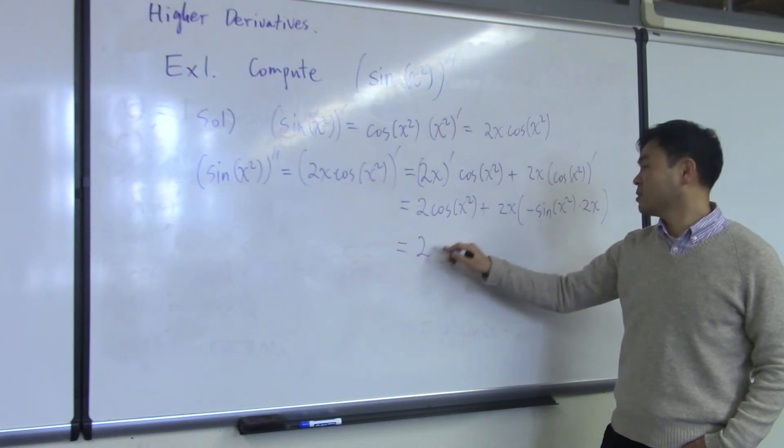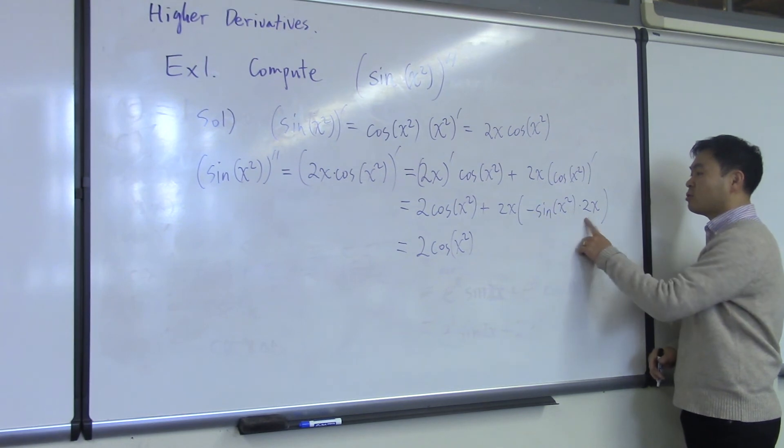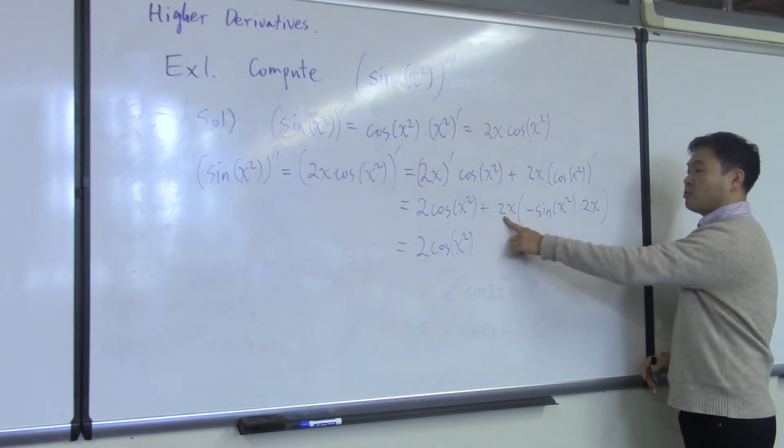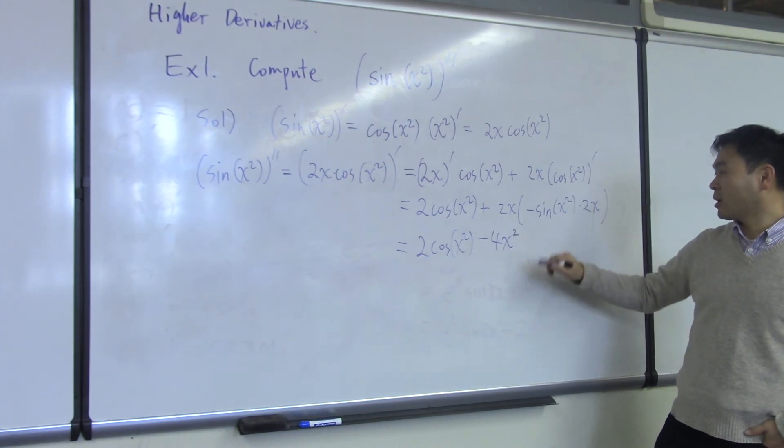And then, let's simplify as much as possible. The way you simplify this is, you have a negative 2x multiplied to 2x. What's that? That's negative 4x squared, and you have sine x squared.